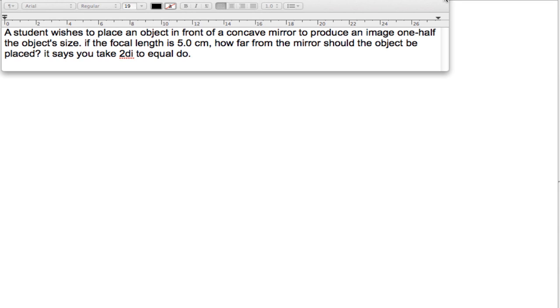It says to take 2di to equal do. Well, that's a big hint for this question. So let's set everything up. We know that the magnification is equal to one-half and the magnification factor is equal to di over do. And that's how they end up getting do to be equal to 2di.